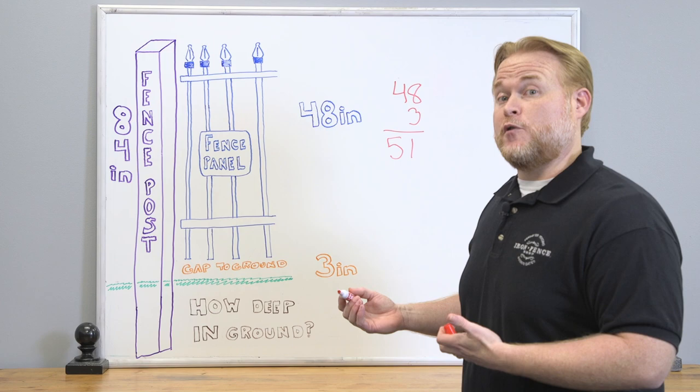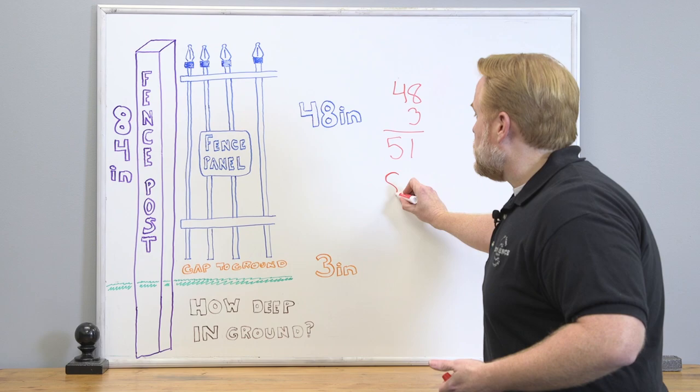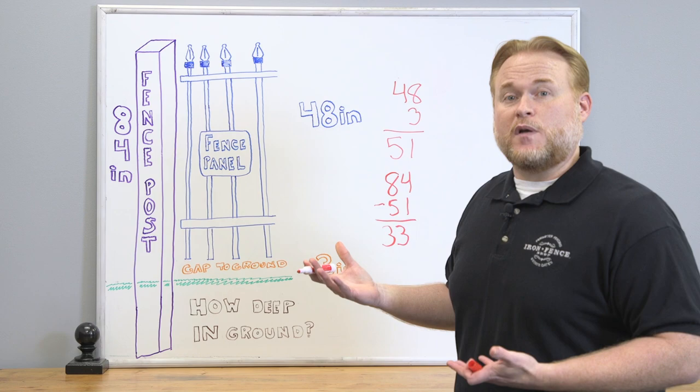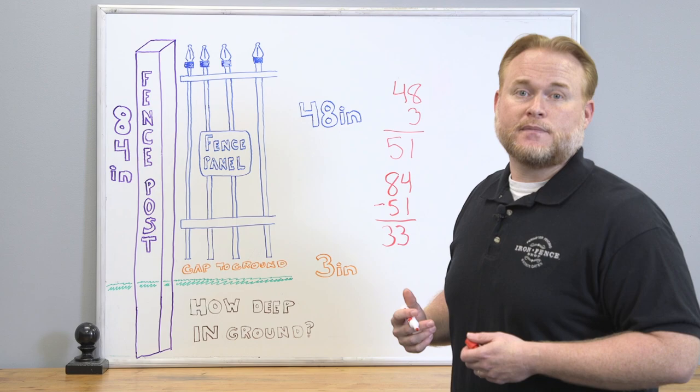So now that we know we've got 51 inches of our 84 inch post above ground, now let's figure out how much of it's going to go below ground. So we take our 84 inch post, we deduct the 51 inches of it that's going to be above ground, and that leaves us with 33 inches. So out of our 84 inch post, 51 inches is going to be above ground, 33 inches is below ground, and that 33 inches is how deep you're going to dig your post hole.